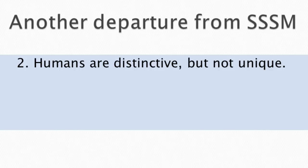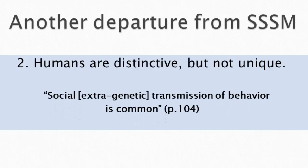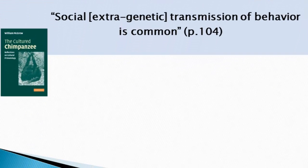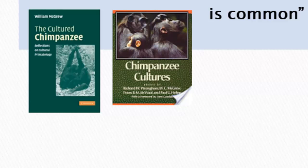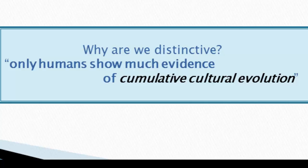Another departure from the standard social science model is that humans are downgraded from uniqueness to simply distinctiveness. Peter Richerson and Robert Boyd argue that social transmission of behavior is common and has been documented in a multitude of species. Many evolutionary biologists discuss culture in guppies because there's learned behavior that varies between groups. Primatologists have also identified socially transmitted variation in behavior in chimpanzees.